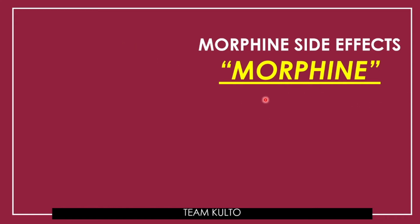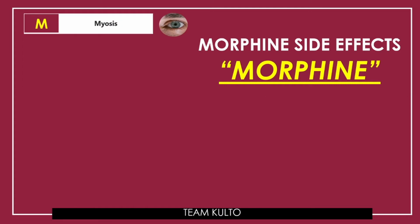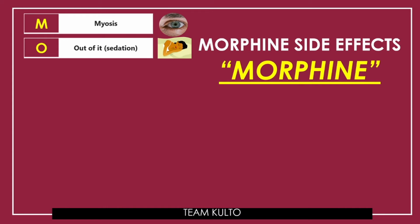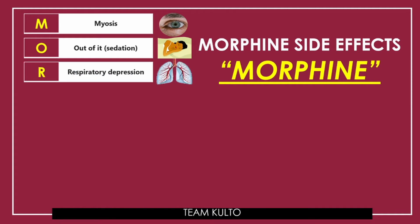M for miosis — excessive constriction of the pupil of the eye. O for out of it, meaning sedated ang iyong pasyente — groggy, antok na antok. R for respiratory depression. Remember, bago ka mag-administer ng morphine sulfate, you need to check the RR. Because it can cause respiratory depression — this is an ultimate downer. So you really want to be mindful about checking the RR and respiratory status of your patient prior to administering your morphine. Normal RR is 16 to 20; below 16, you don't want to give morphine to your patient.